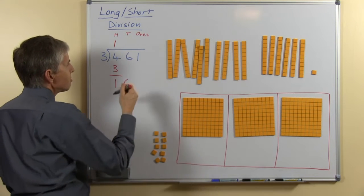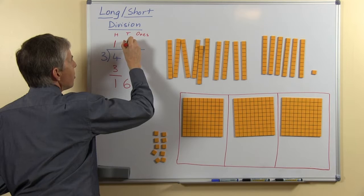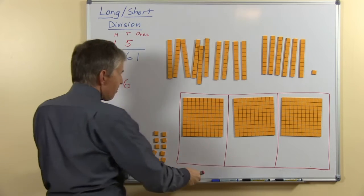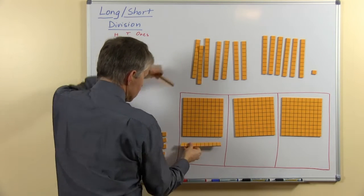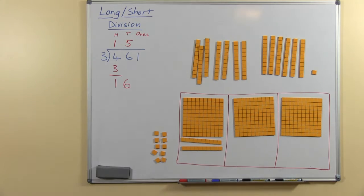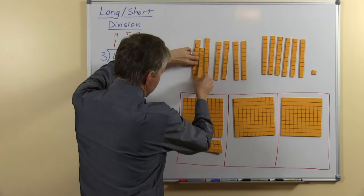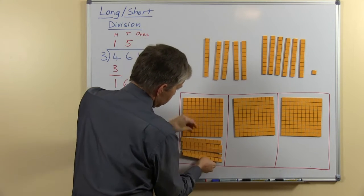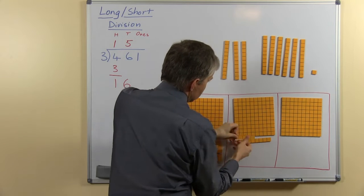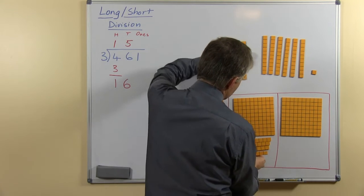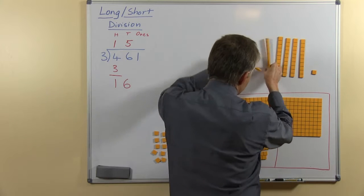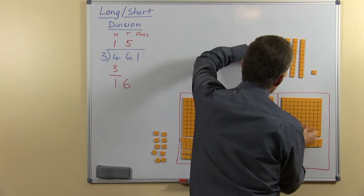So 16 shared among 3 means everybody will have 5 because 5 threes are 15, so let me do that quickly. 3, 4, 5, 1, 2, 3, 4, 5 and then the third one the same.